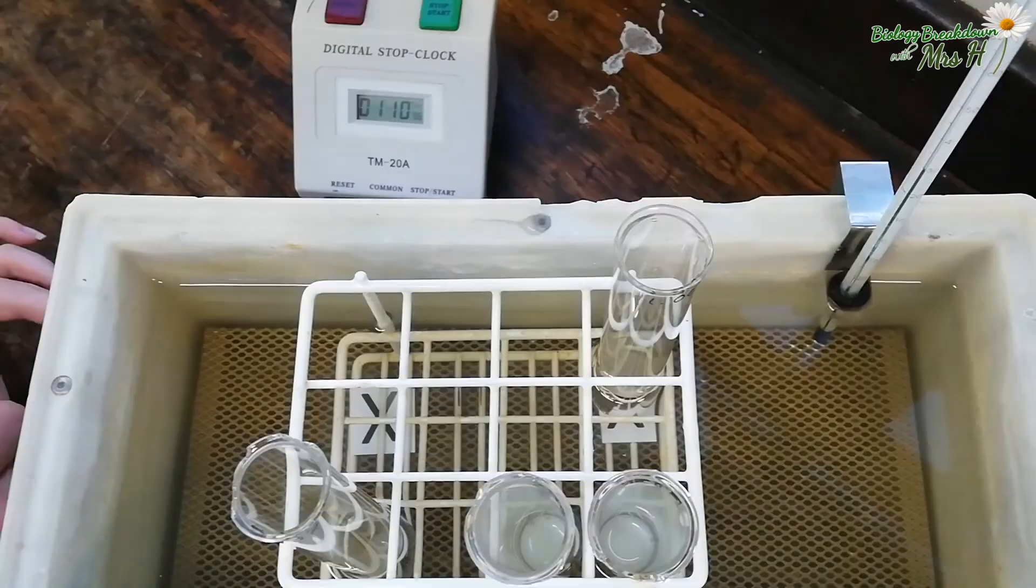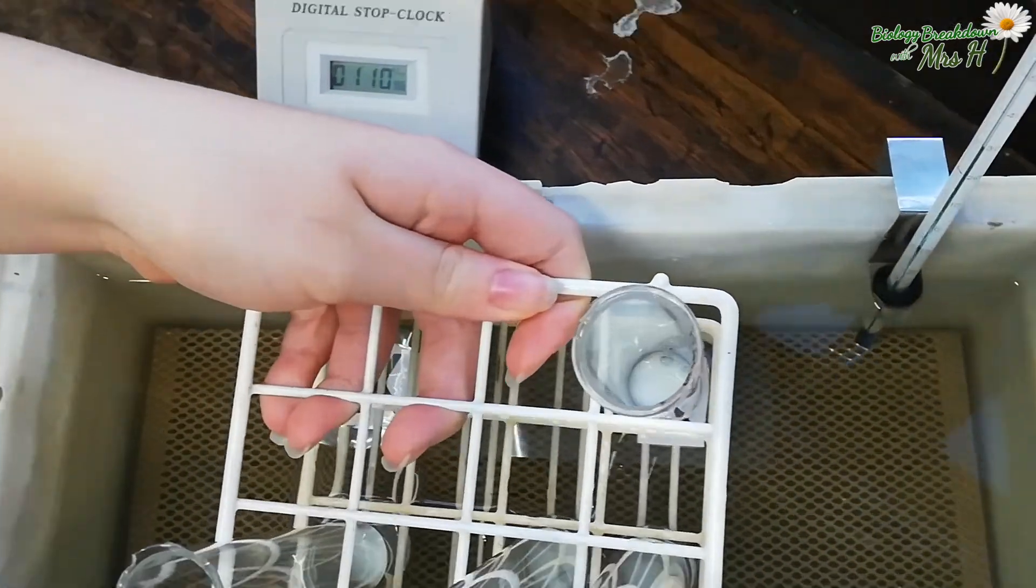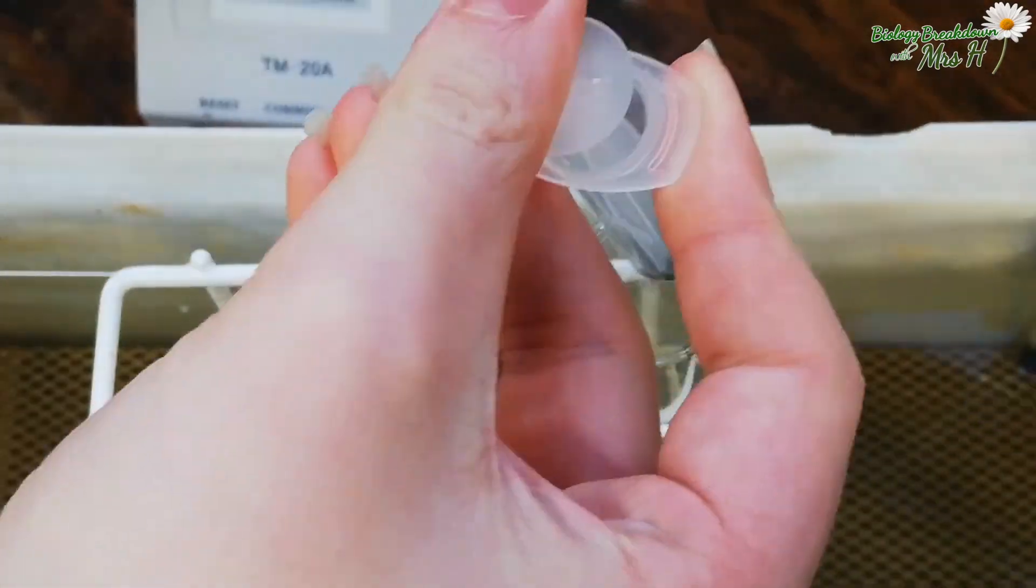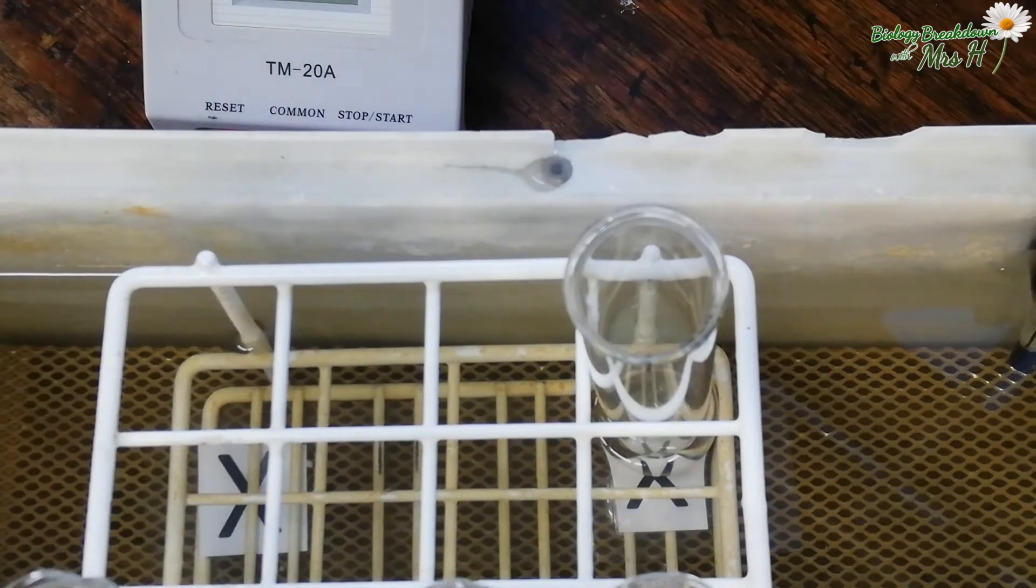Once you've done this you need to repeat that for 1% trypsin solution and then 0.5%, 0.25% and 0.13%.